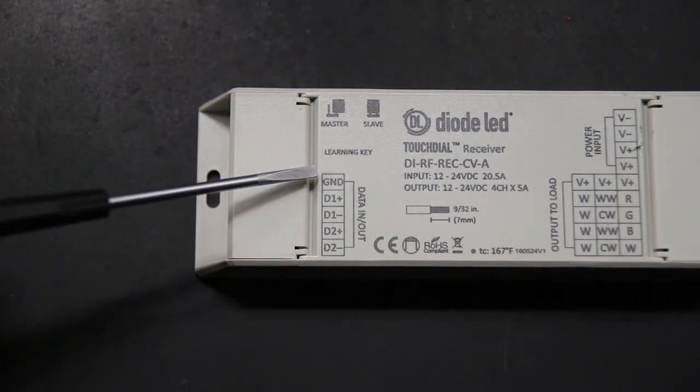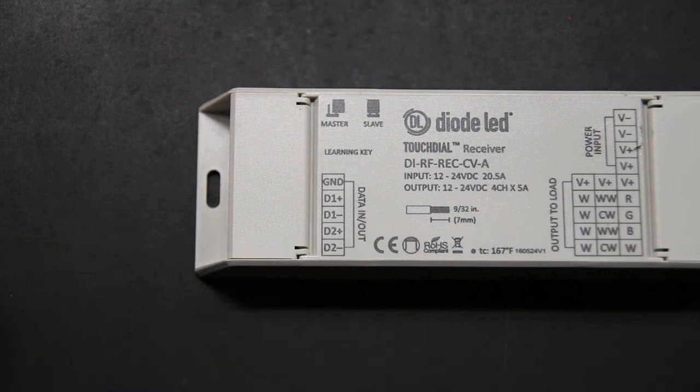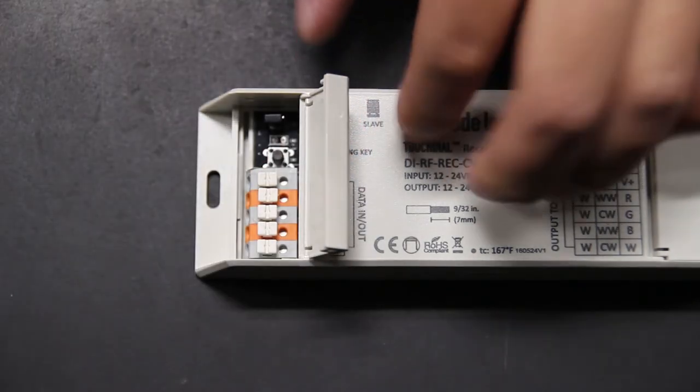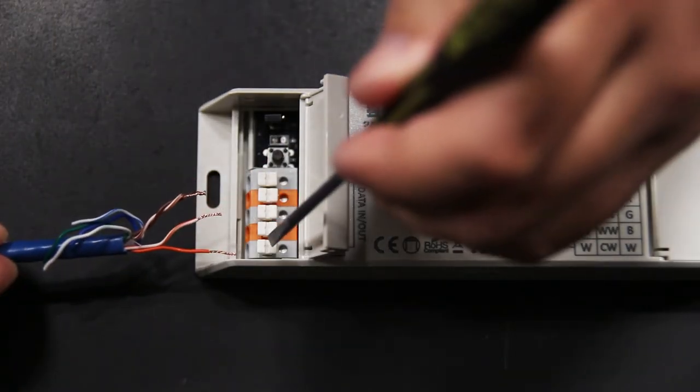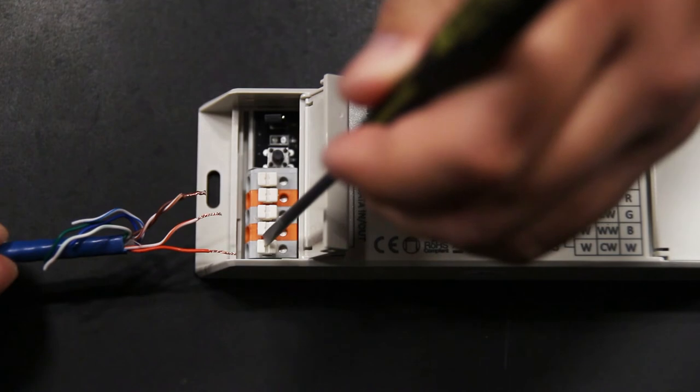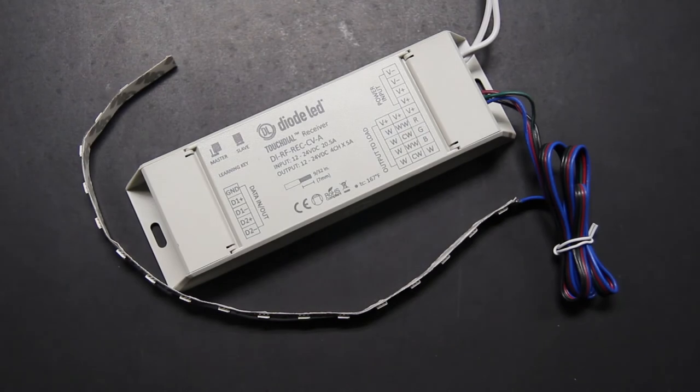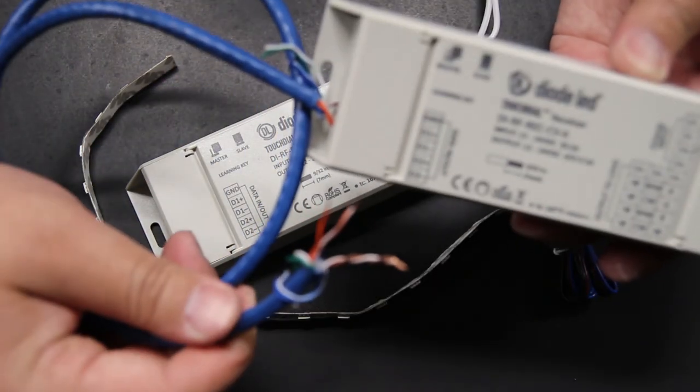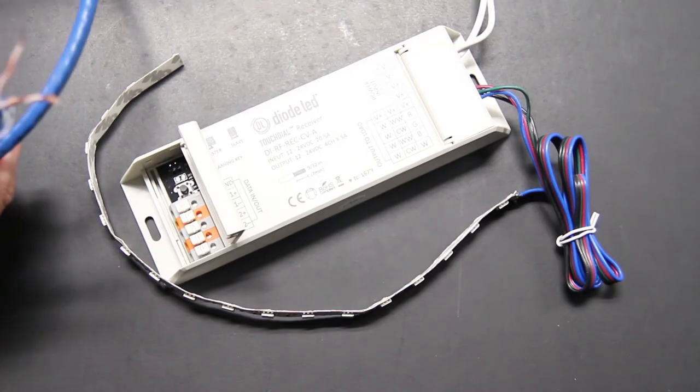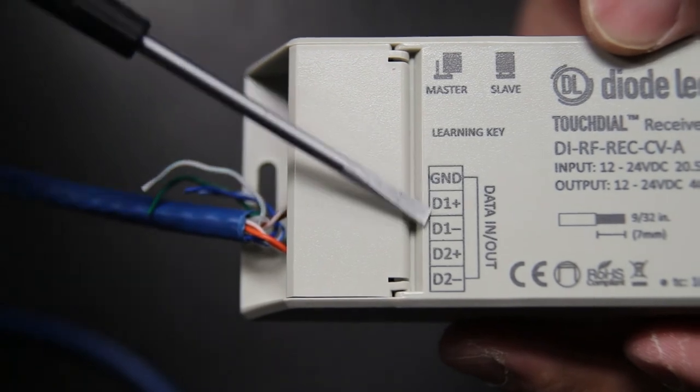The D1 positive and negative terminals represent the data input connection point and the D2 positive and negative terminals represent the data output. The master touch dial receiver will not be using the D1 terminal. Insert the CAT5 cable into the D2 positive and negative terminals by using your fingers to press down on the tabs. If you're experiencing difficulties, use a pen or flat head screwdriver to gently assist the process. On the first slave touch dial receiver, insert the other end of the data cable wires into the D1 positive and negative terminals respectively. Repeat this process until all touch dial receivers have been chained together. You'll also notice a ground terminal for the data connection. This terminal is extremely important and should be the first wire connection done when using the data link system.